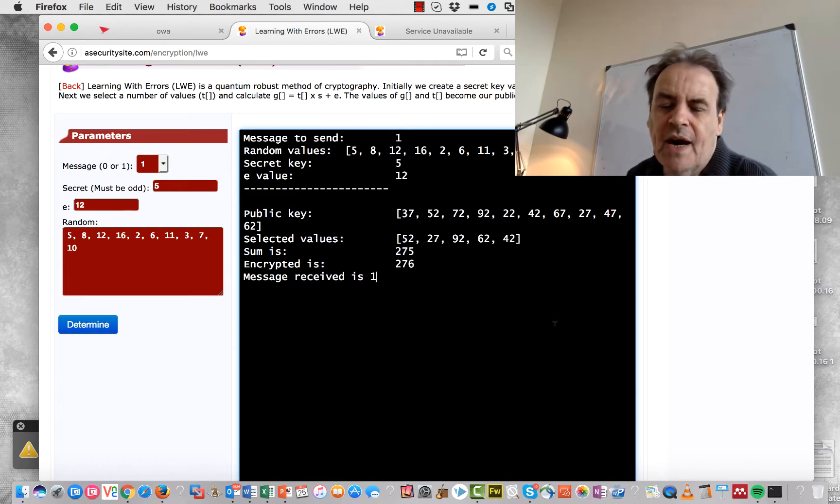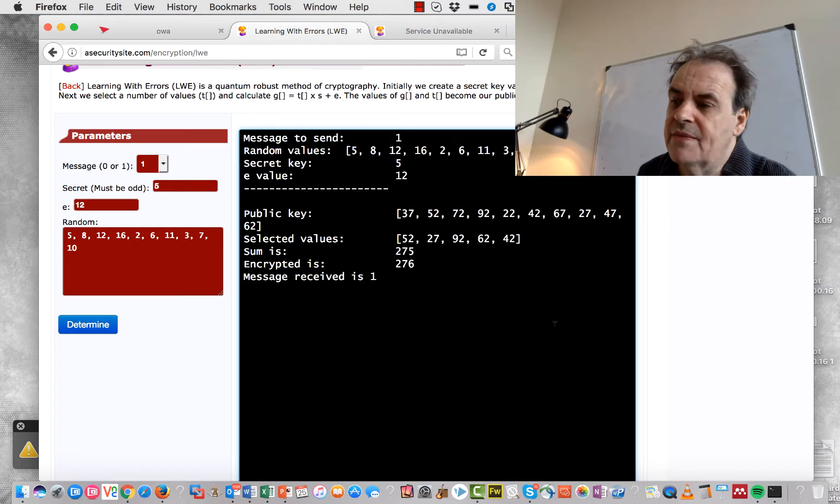With public key encryption we have two keys: we have a public key which we can distribute and then we have a private key which we keep secret and that's the thing that will decrypt our ciphertext.